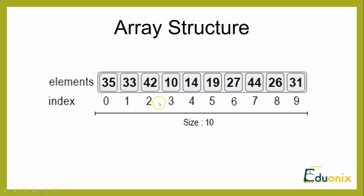Each element in the array is accessed using its index number. For example, the second element is 42, and the 8th element is 26. This is like a key-value pair — the key is the index number and the value is the element. Each element can be accessed via its index.